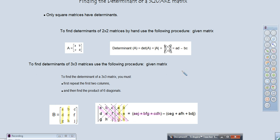Then from there we go on to a 3x3. We had a first step, and that first step was to take the first two columns and move them outside. You had to repeat the first two columns and then find the product of the six different diagonals. We would add the products of the diagonals that fell, and then add the products of the diagonals that rose, and then we subtracted those two different sums.